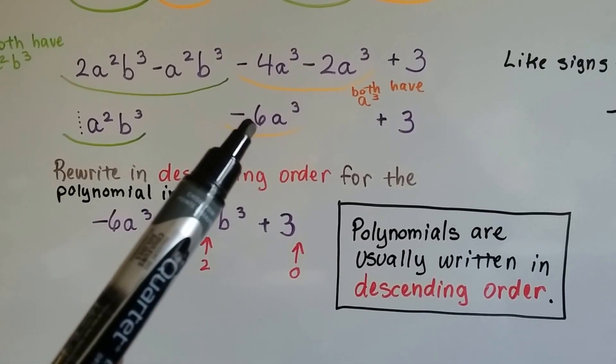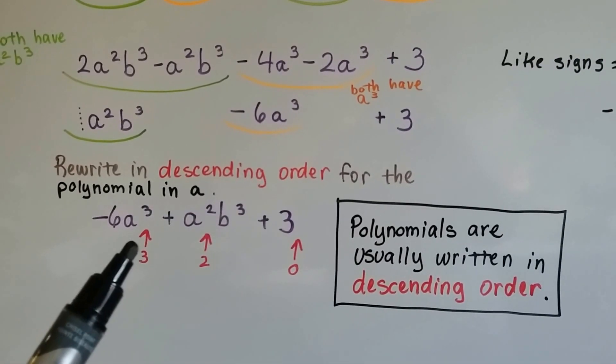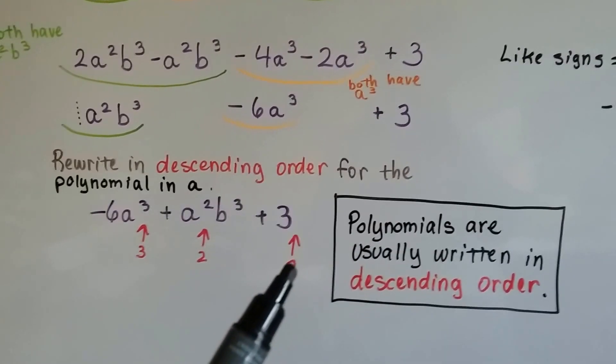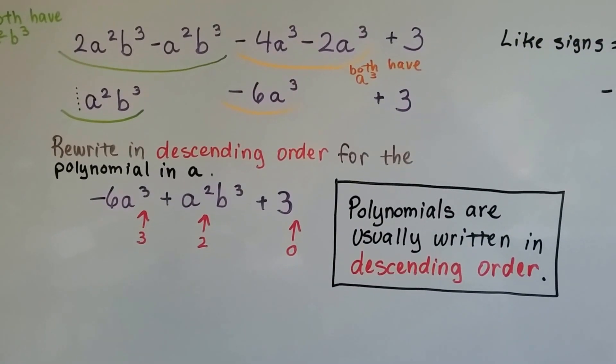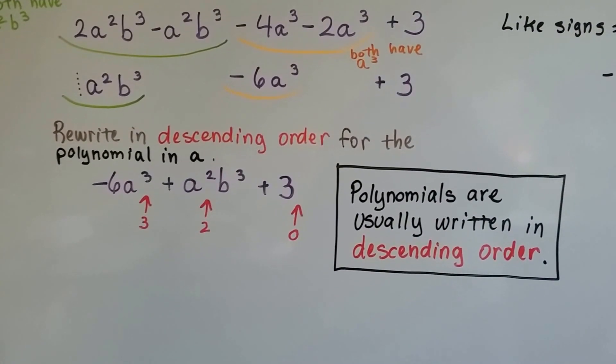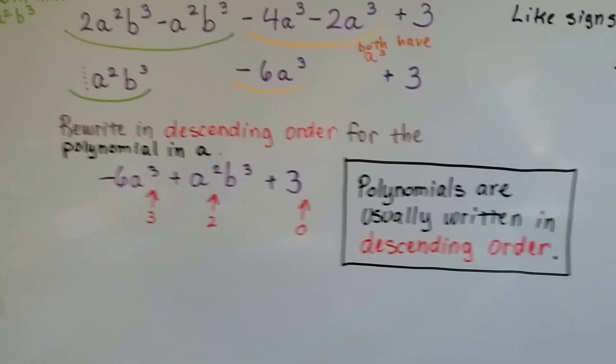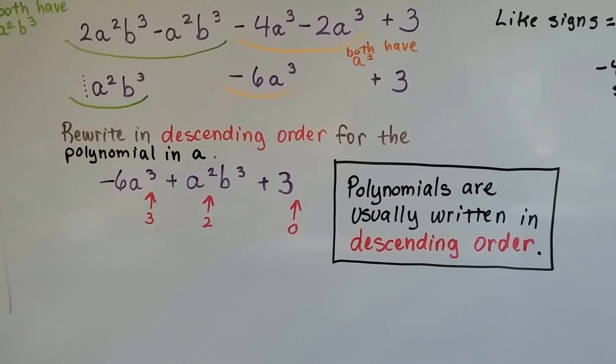is going to be this guy right here. The negative 6a to the 3rd. Then the a to the 2nd, and then to the 0. And this could be 3a to the 0 power, couldn't it? Because the a to the 0 power would just be a 1. So polynomials are usually written in descending order.